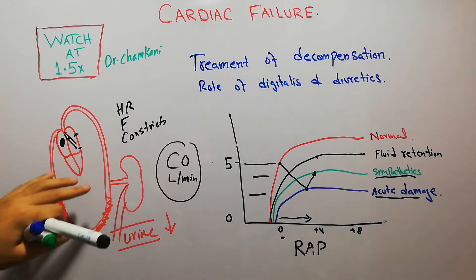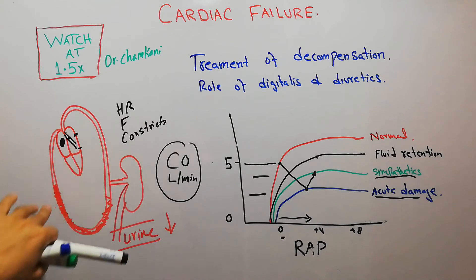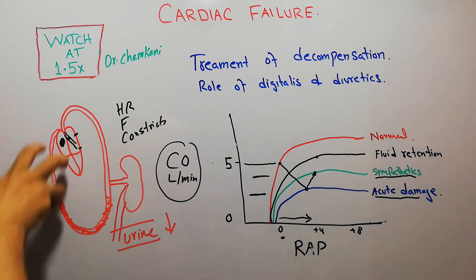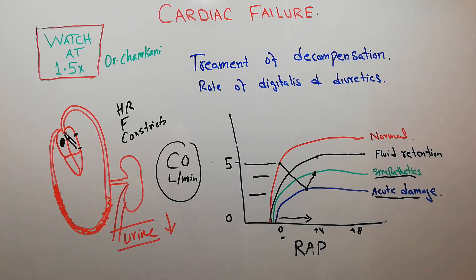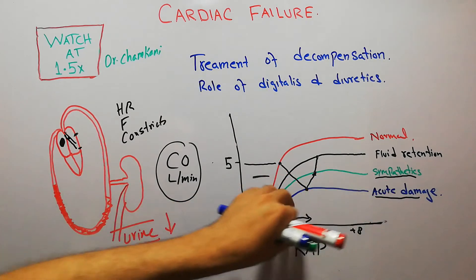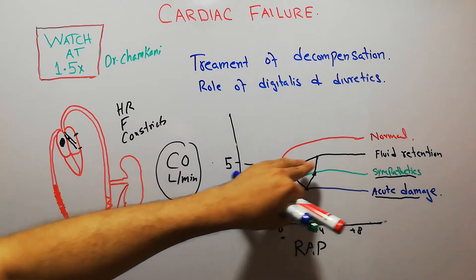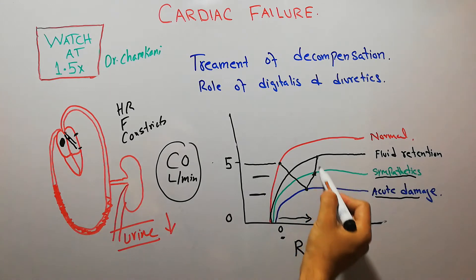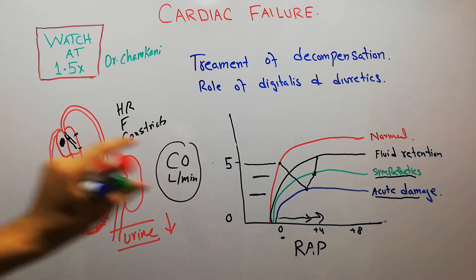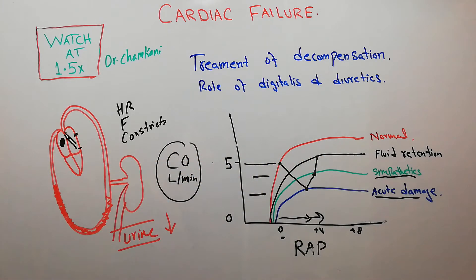As more fluid is retained by the kidneys and urine output decreases, the amount of blood in circulation increases. This increases venous return to the heart and raises the filling pressure, which increases cardiac output a little bit more. Eventually the cardiac output may become exactly normal, but at the cost of a slightly higher right atrial pressure.